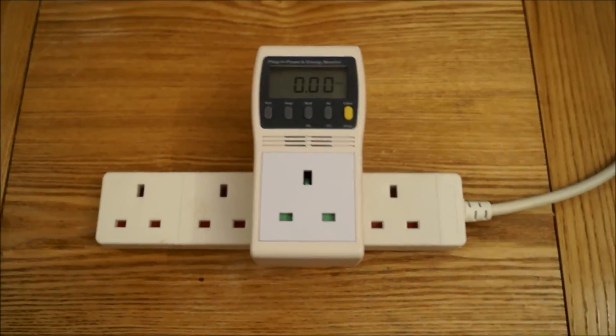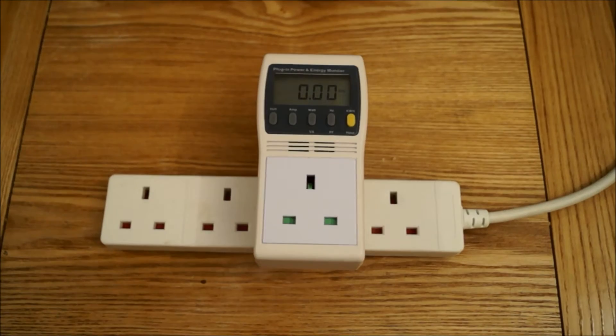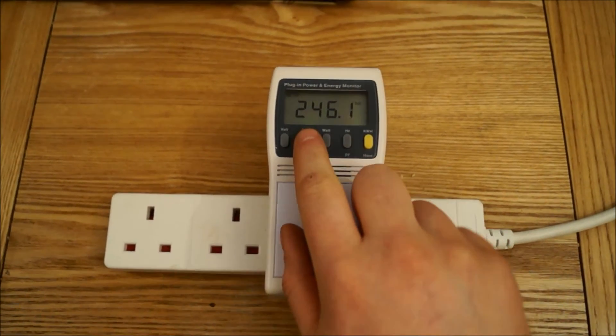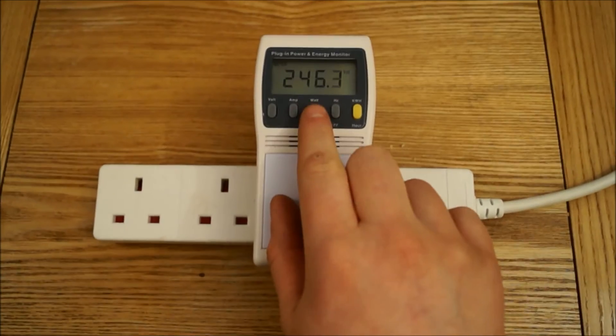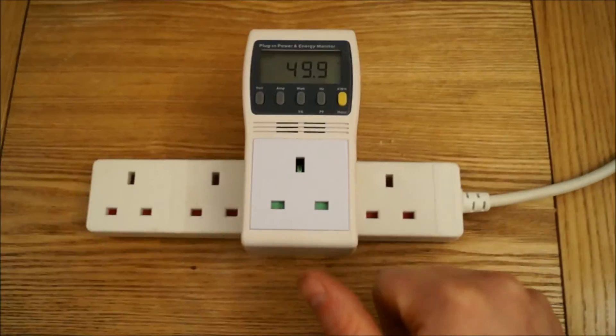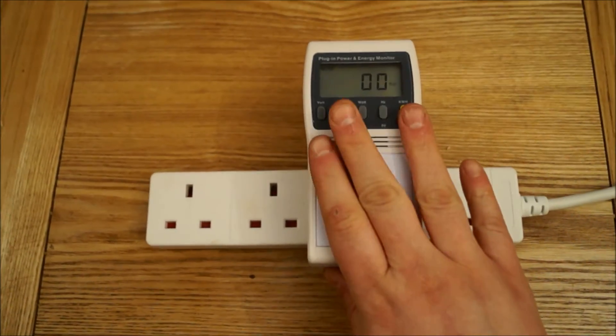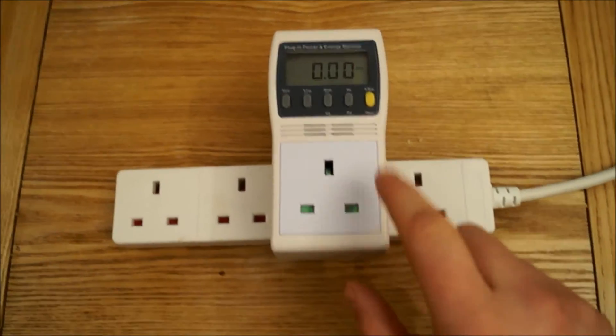Here we've got an energy monitor. This is quite handy because you can actually easily measure different aspects such as volts, 246 volts coming through the mains there. You can measure the hertz and it's 49.9 hertz. You can also measure watts and amps but because there's nothing plugged in there's no draw on that.